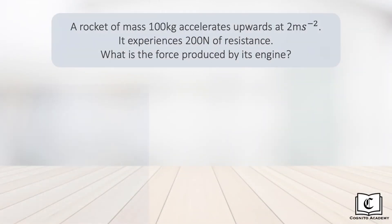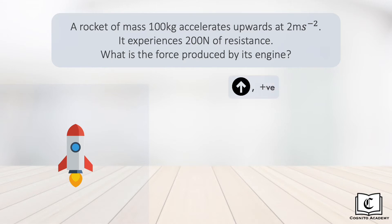Let's try a more challenging example. We have a rocket of mass 100 kilograms accelerating upwards at 2 meters per second squared. It experiences 200 newtons of resistance. What is the force produced by its engine? The first step is to choose the positive direction — in this case, we take upwards to be positive. Next, let's draw the free-body diagram of all forces acting on the rocket.